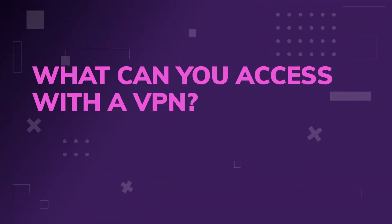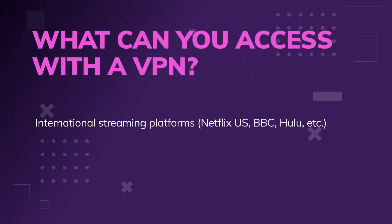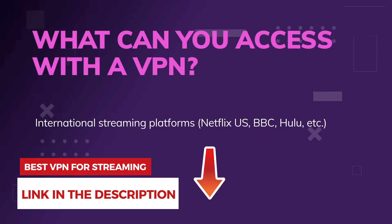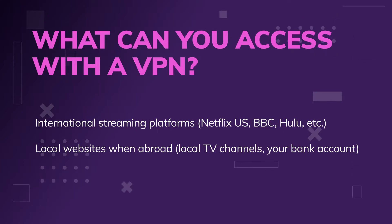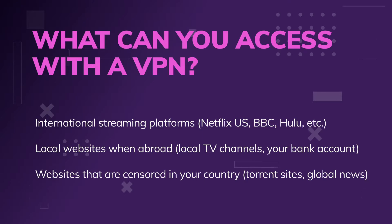What can you access with a VPN? There are international streaming platforms — Netflix, BBC, Hulu, and so on. Local websites when you're out and about, local TV channels, your bank account — specific local services that require you to be local in order to use them. There's also censored content: websites that are censored in your country, whether they're torrent sites, global news, or what have you. Another use is online games — certain online games are restricted to Korea or South Korea and places like that. A lot of gamers, particularly MMO gaming channels, use specialized gaming VPNs to access games from other countries.